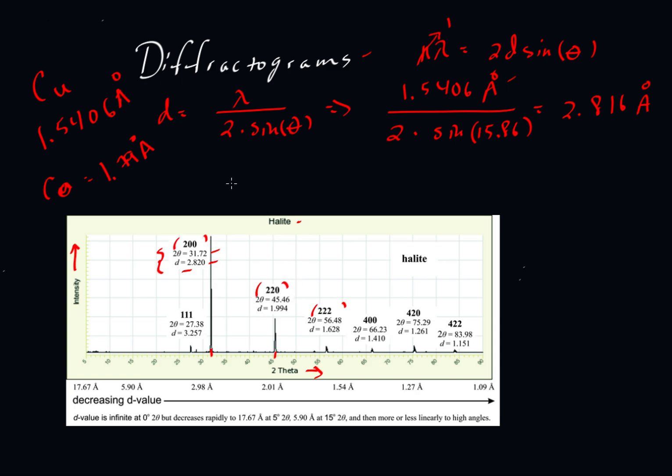Let's do the same thing for the 220. We'd have a d spacing equal to 1.5406 angstroms, divided by 2 times the sine of half of 45.46. So 22.73 degrees. When I do that calculation, I get the value of 1.994 angstroms. That's the distance of those layers of atoms represented by the direction 220. That's exactly what Dexter Perkins reports here.